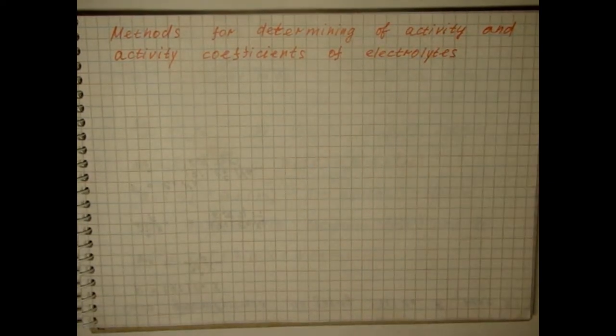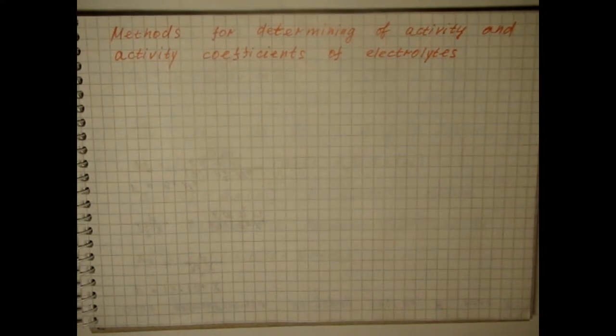There are several methods for determining the activity and activity coefficients of electrolytes. For example, salt activity can be found by solvent vapor pressure above the solution.